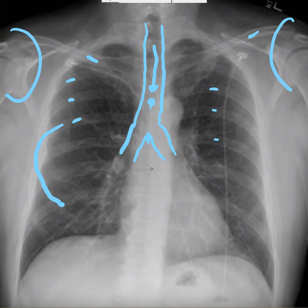The vertebrae you can see on a film that has decent technical quality. You can see vertebrae here, here, here — you can count down. I'm going to erase all these, then I'll show you how to count.